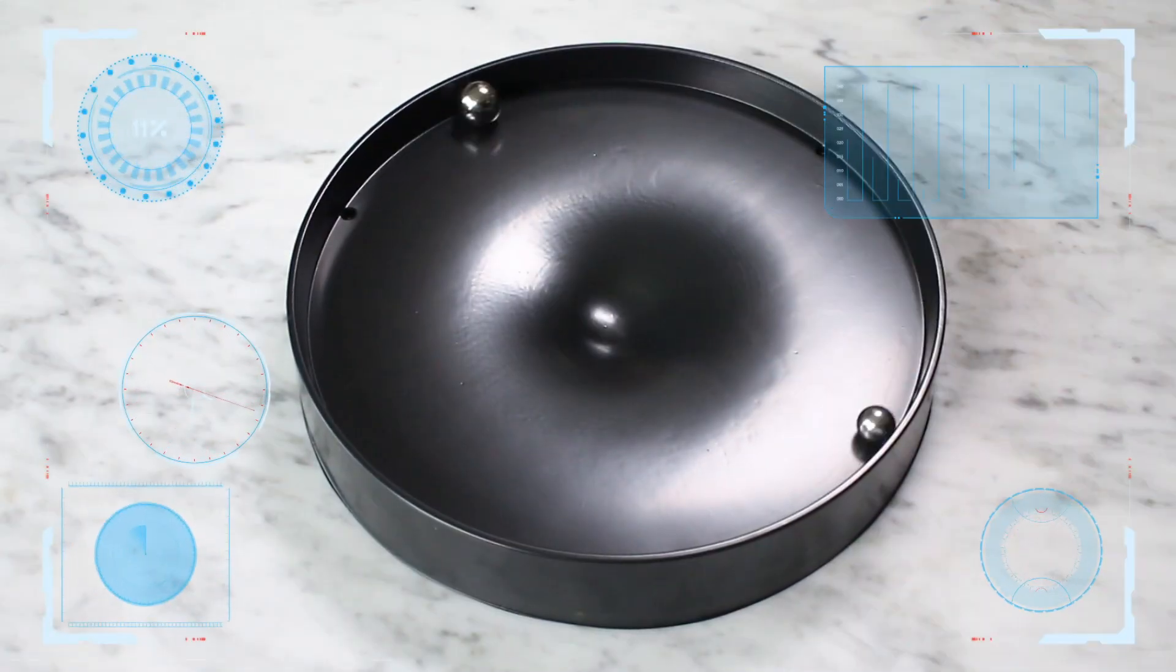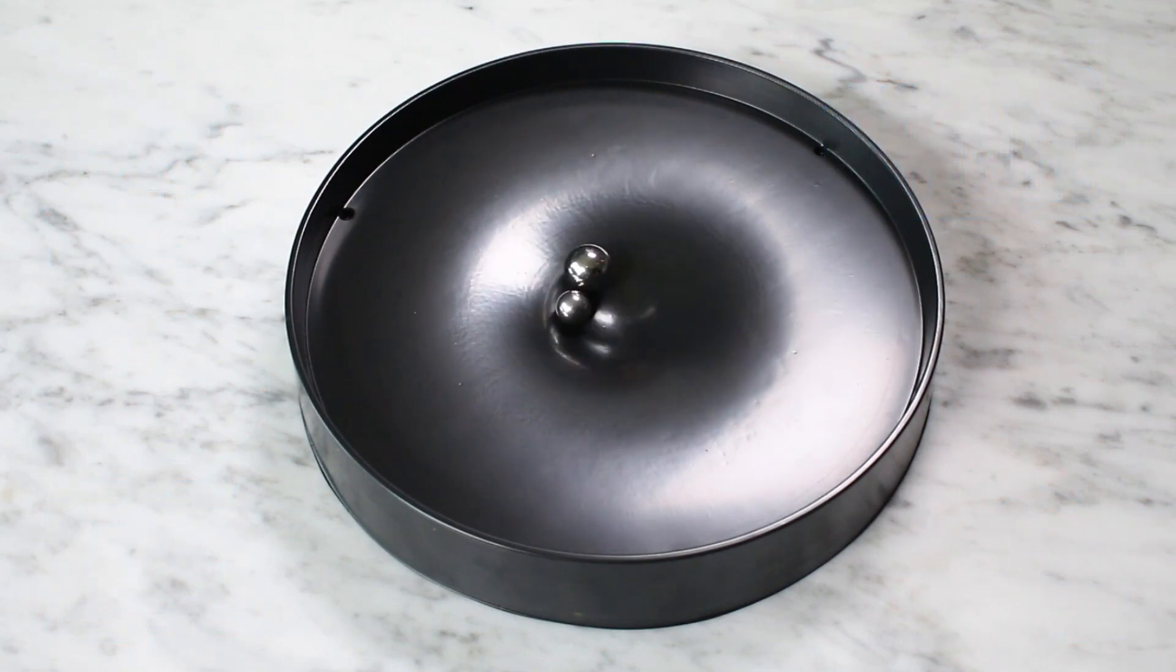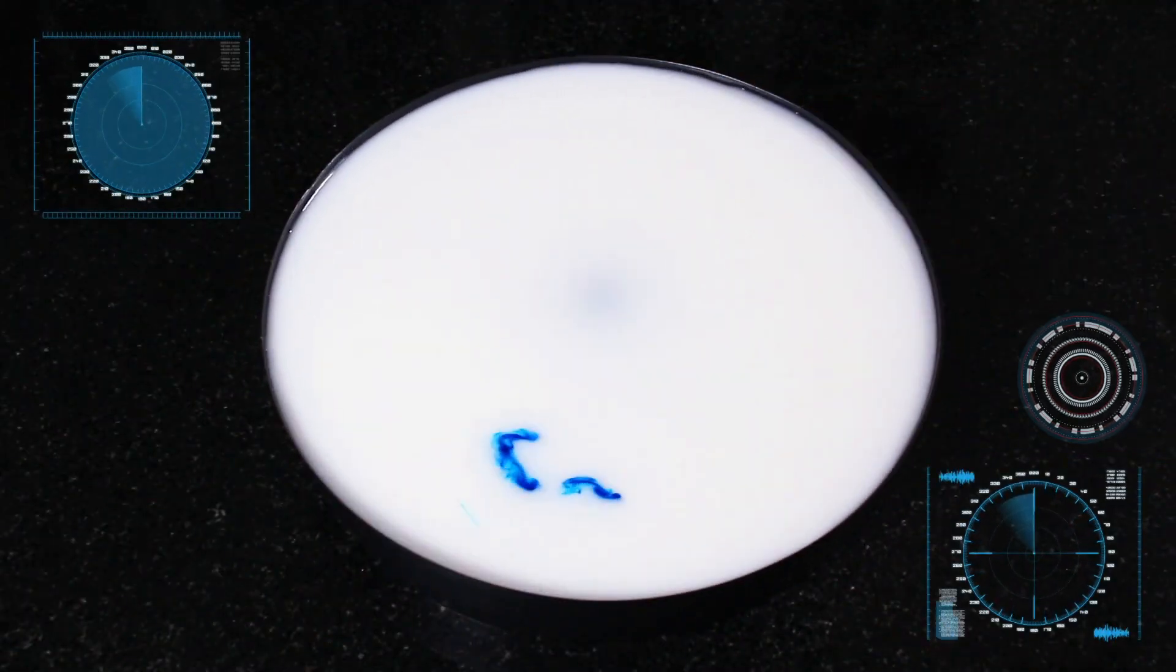Experiment with a gravity well to model two orbiting black holes and their catastrophic collision. Make your own swirling spiral galaxy.